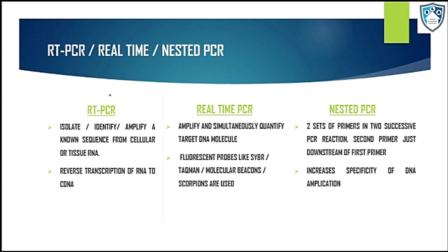Now let's come to the modifications of PCR one by one. Let's start with RT-PCR. RT-PCR is basically used to isolate, identify, and amplify a known sequence from cellular or tissue RNA. It involves the use of a particular enzyme known as reverse transcriptase to reverse transcribe the RNA into cDNA.